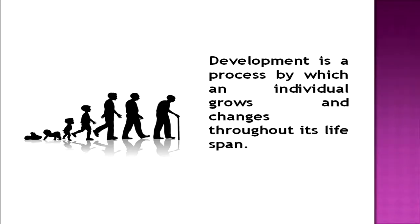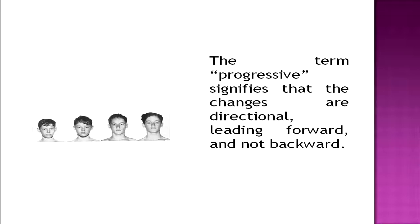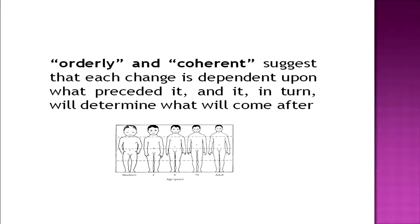Let us begin with what we actually mean by development. Development is a process by which an individual grows and changes throughout their life span. This change may be defined as a progressive series of changes which are orderly and coherent, and which lead towards the goal of maturity — that is, how we mature over the years. The term progressive signifies that the changes are directional, leading forward and not backward. As we can see in this picture, development is leading in a forward direction. Orderly and coherent suggest that each change is dependent upon what preceded it, and in turn determines what will come after.